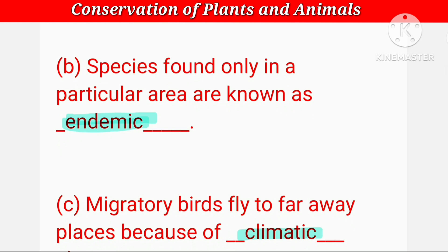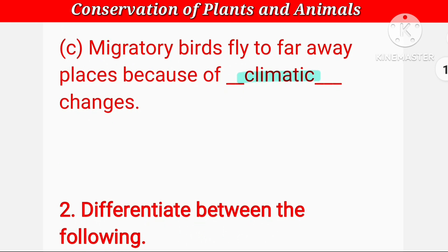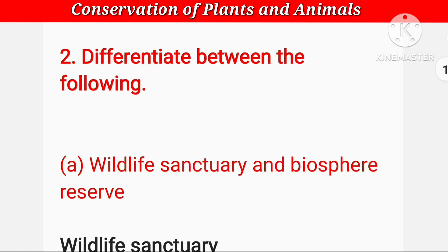Species found only in a particular area — species का मतलब है प्रजातियाँ। जो किसी particular area में पाई जाने वाली प्रजातियाँ होती हैं, उन्हें endemic के नाम से जाना जाता है। Migratory birds जो एक place से दूसरी place पर जाती हैं, fly to far away places — वो दूर-दूर की जगहों तक उड़कर जाती हैं, cause of climatic changes — climate के change की वजह से।